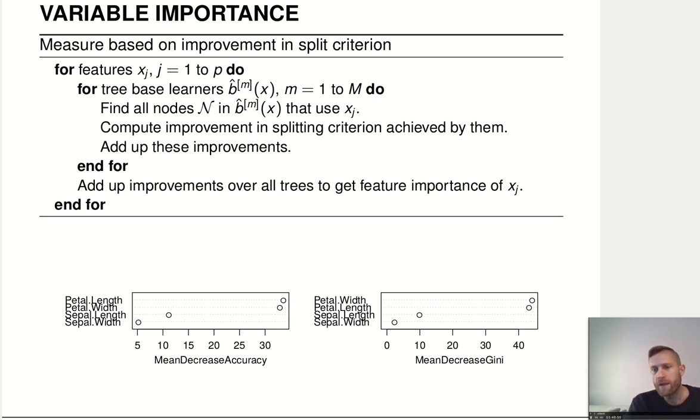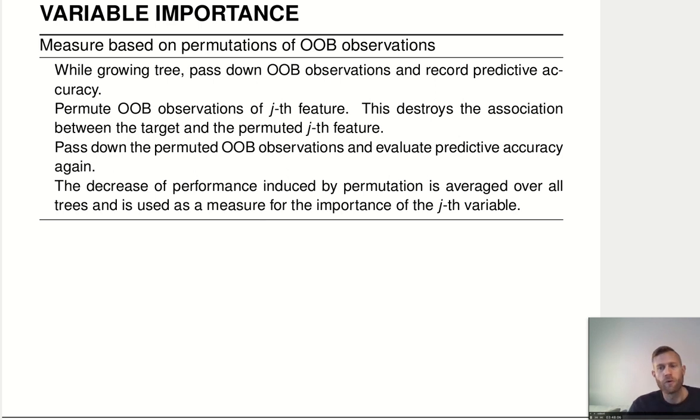This works okay, but there's another way to do it that's also important. That's a variable importance measure based on permutations of the out-of-bag observations. So while we're growing the tree, we talked about this already, we are only using a part of the dataset that was part of the bootstrap sample used to construct that tree. So we have basically a test dataset available.